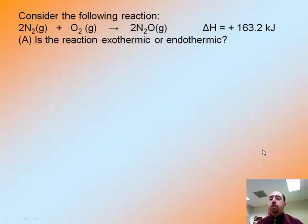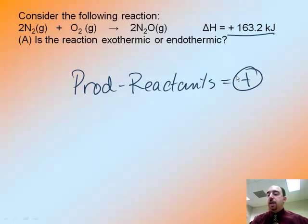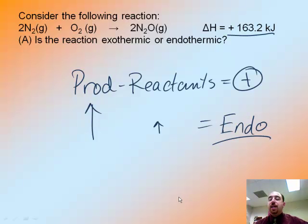Consider the following reaction: 2N2 plus O2 yields 2N2O. And it gives me a delta H of 163.2 kilojoules. The question says, is this reaction exothermic or endothermic? Let's break down this situation. If I have the products minus the reactants and that's equal to a positive number, that means mathematically the products must have been a bigger number than my reactants. So my products have more heat than my reactants did, which means they gained heat. And when you gain heat, you're absorbing. So heat has went in, and this is an endothermic process.